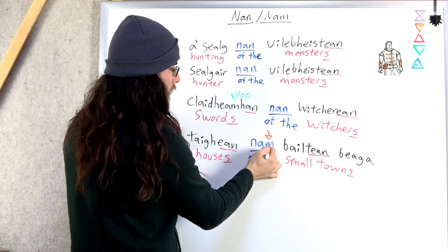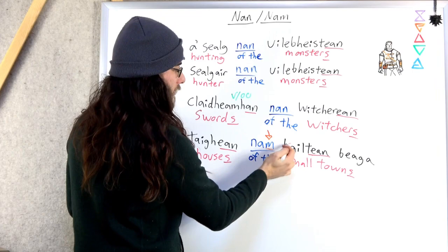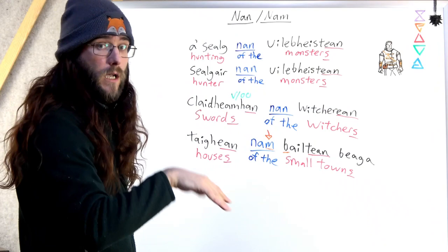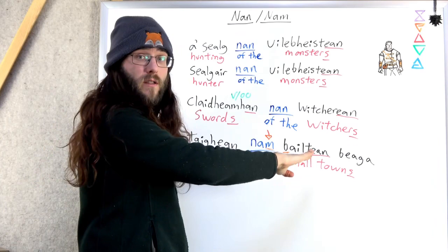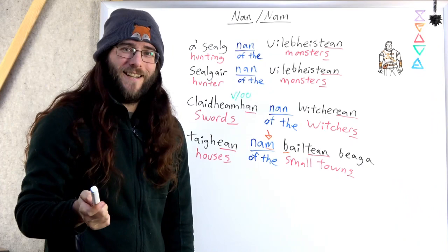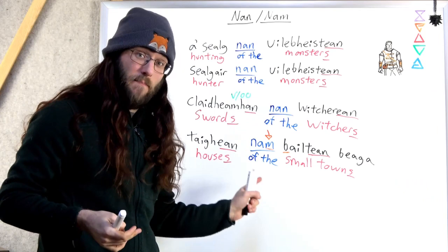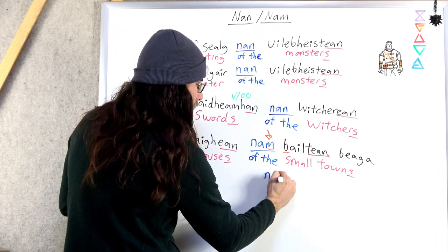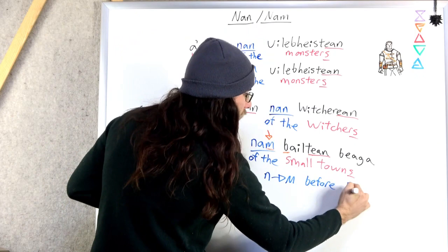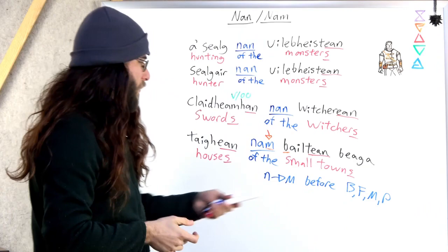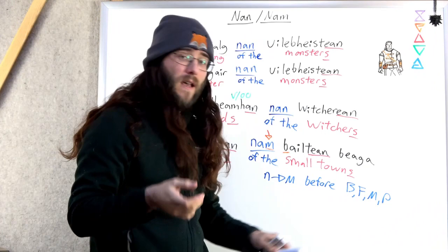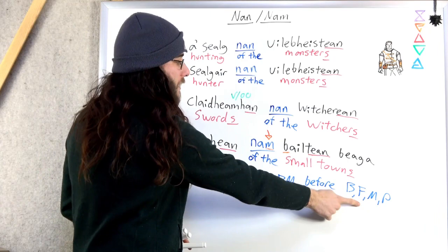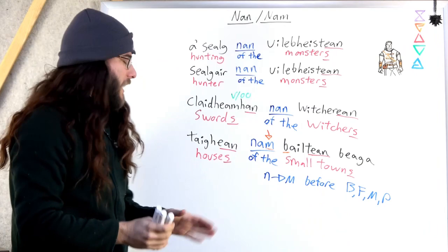Houses of the small towns. Now, why is this nam here? What is going on with this nam? Why isn't it nan? Well, the nam is here to smooth the sound between nan and this word that starts with b. Remember, Gaelic always wants to flow. And there's going to change the sound of the end of a word sometimes to make it flow into the next one better. N becomes m before b, f, m, and p.